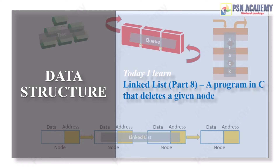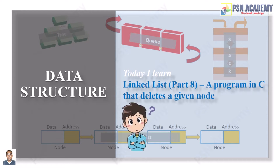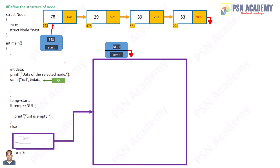Welcome back. In this video, we will learn how to delete a given node in a C program. In the previous videos, we have seen the role of the start pointer that always points to the first node in the list, and the role of a temp pointer which traverses over the list. There is also a third pointer called Mnew which holds the address of the newly created node to be inserted into an existing linked list. But during deletion of a node from a list, we do not require this Mnew pointer.